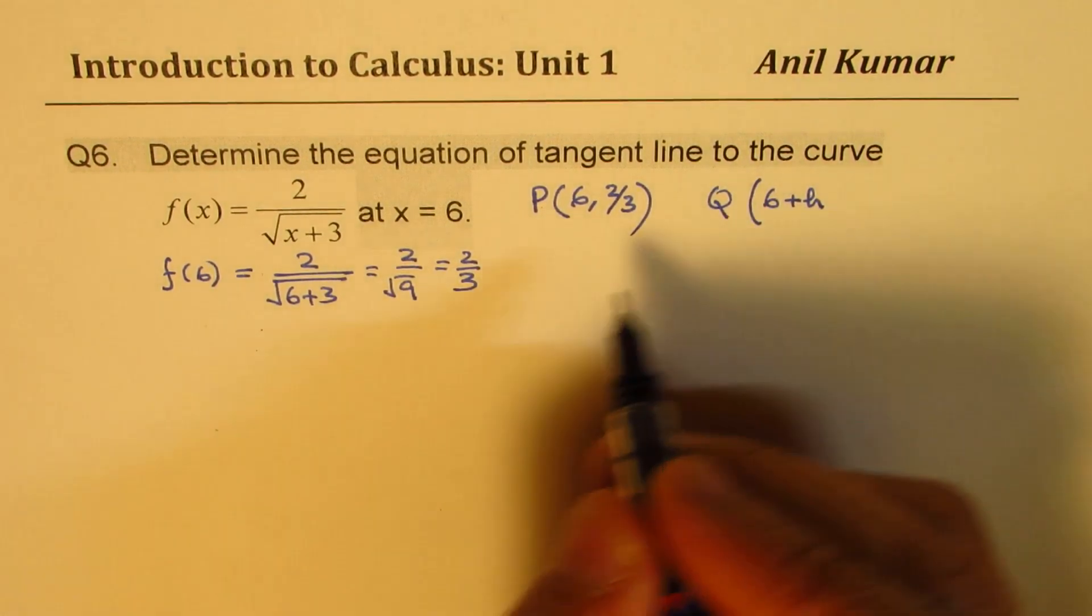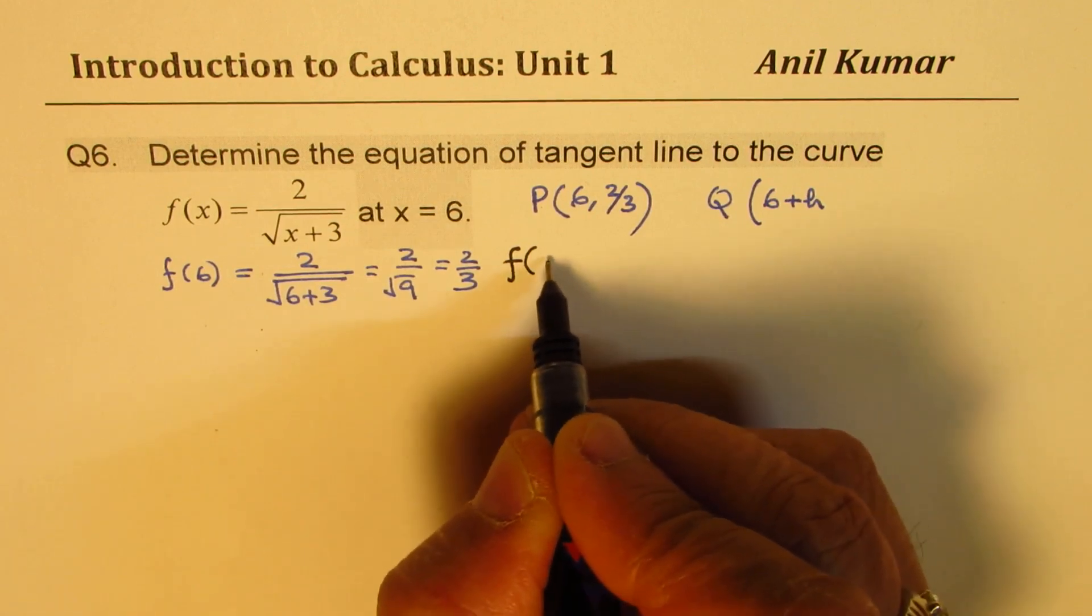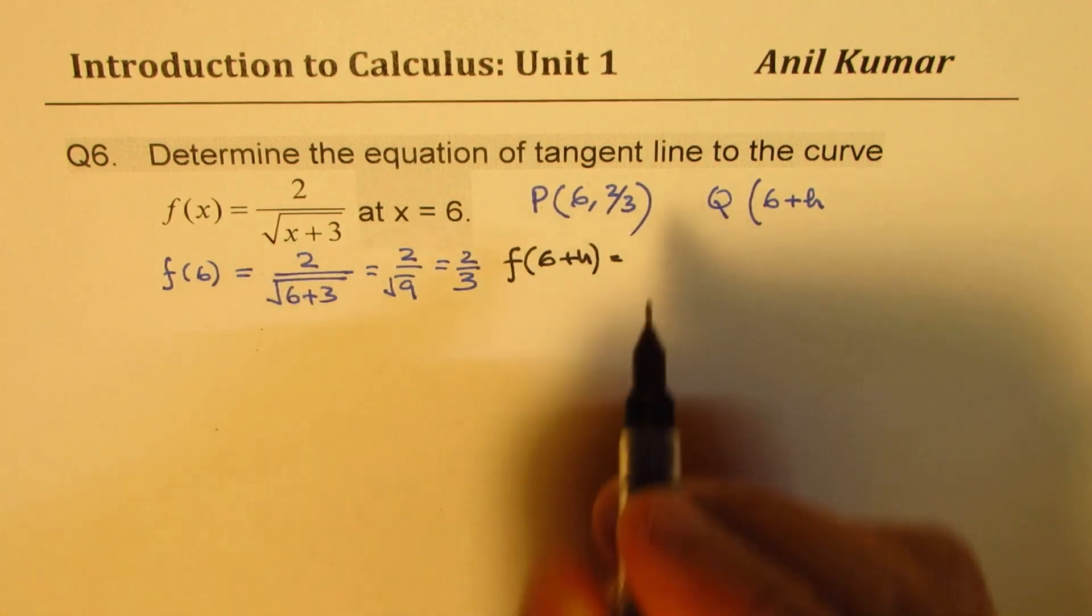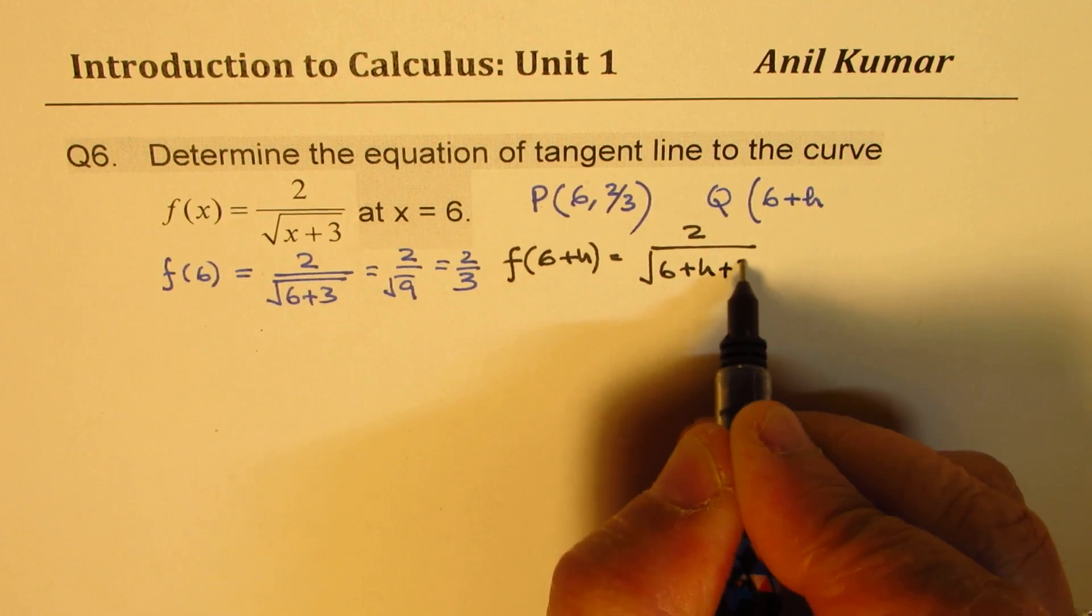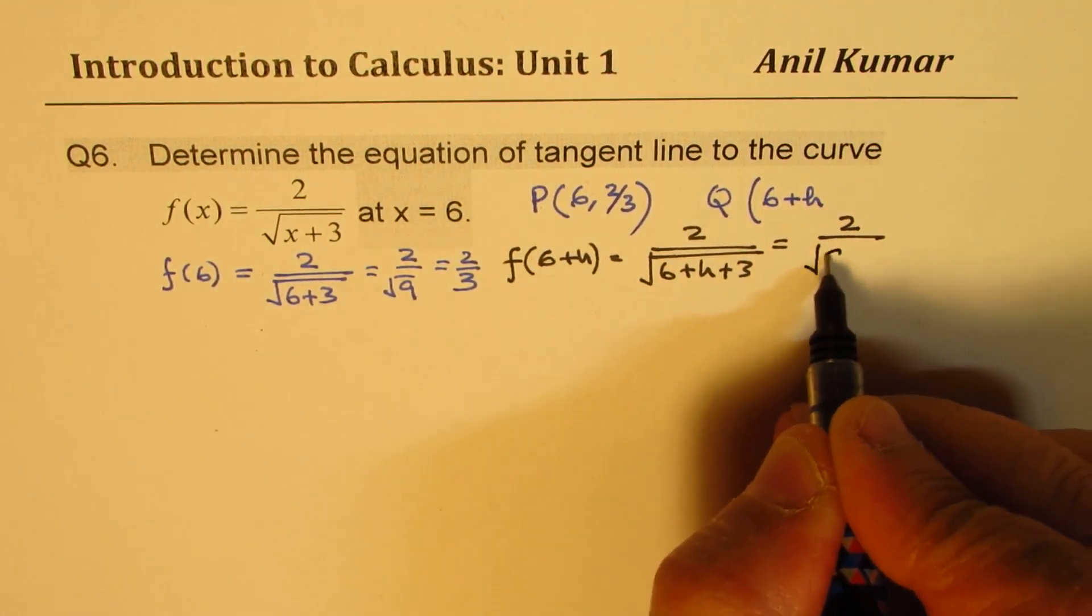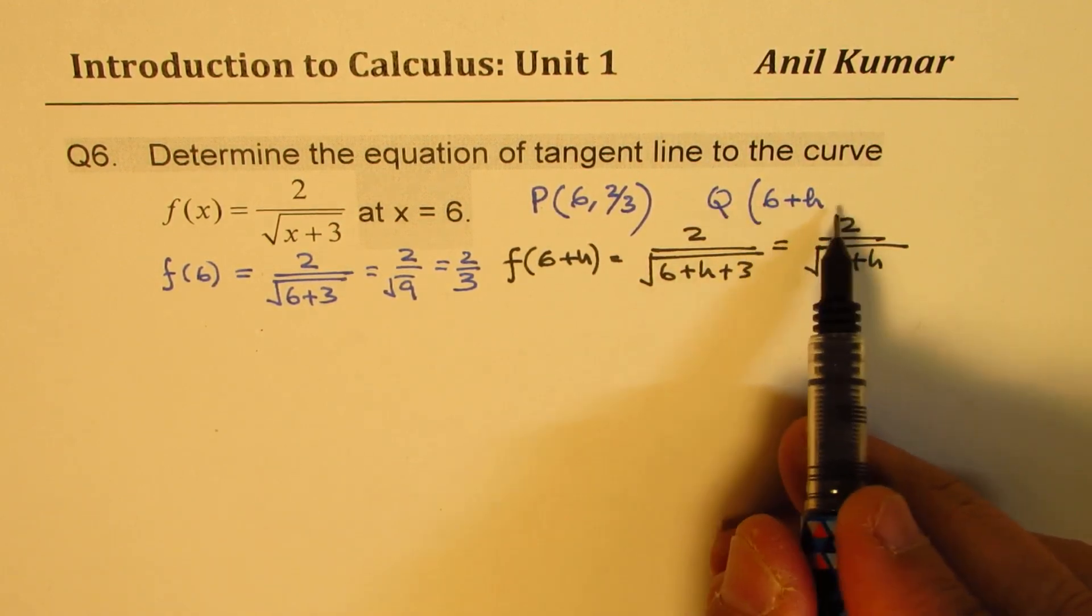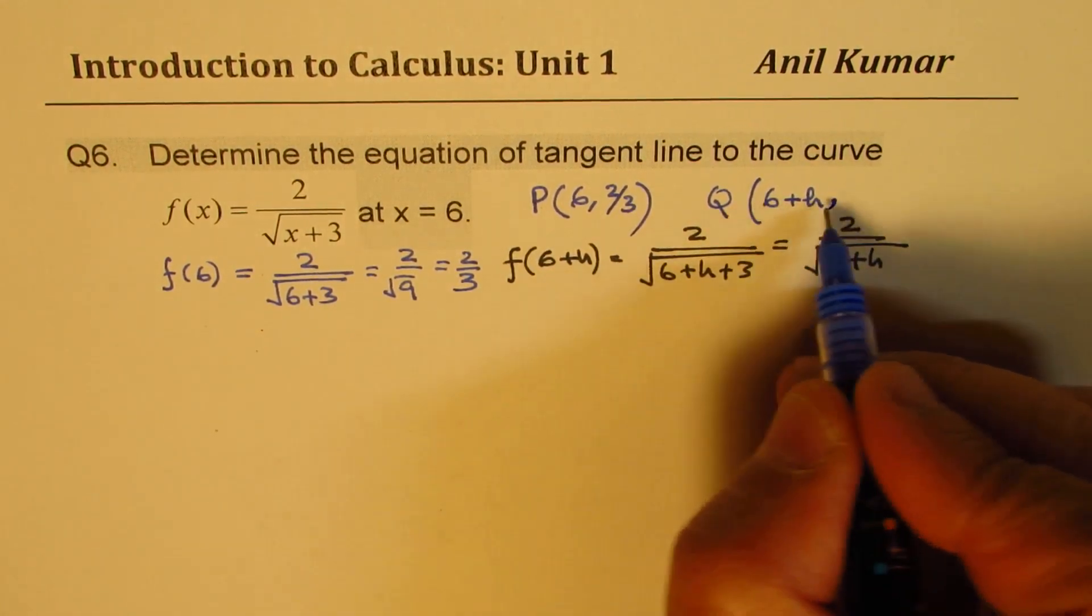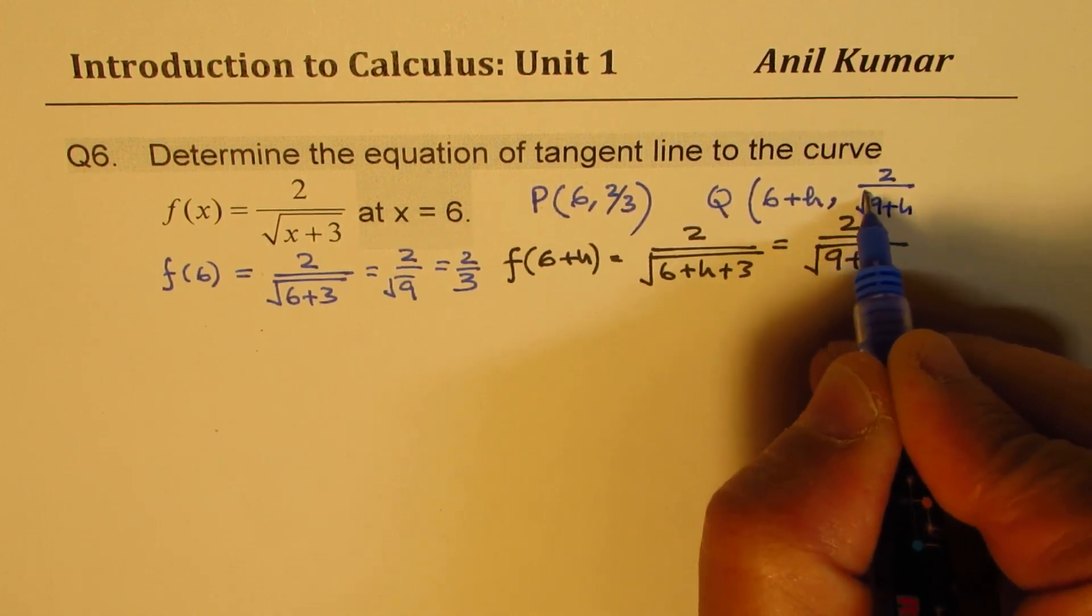So if 6+h is the x value, then what is f(6+h)? We'll replace 6+h here. So we get 2/√(6+h+3) which basically is 2/√(9+h). So that becomes the value of y. So I could write this point Q as (6+h, 2/√(9+h)).